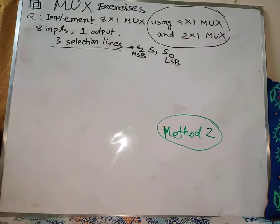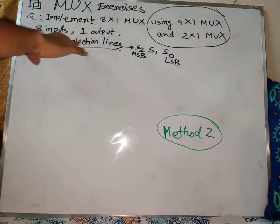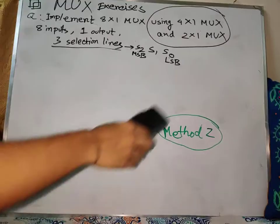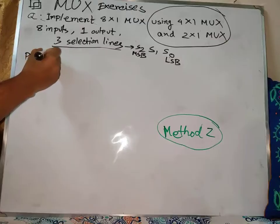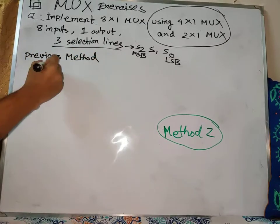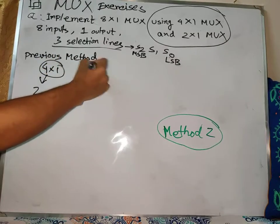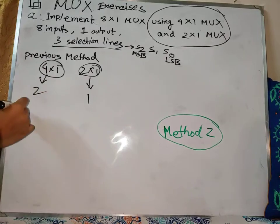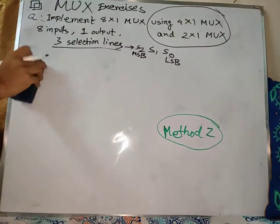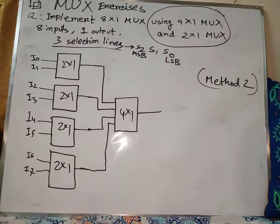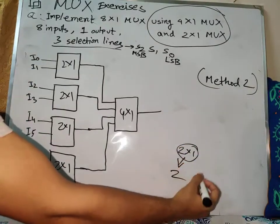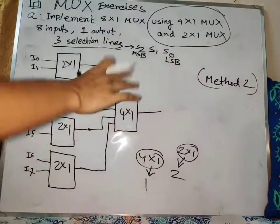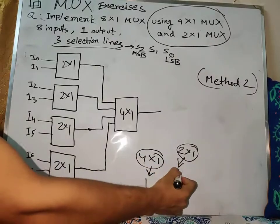Hello, this tutorial covers the same question but with Method 2 — a different approach. We have a 4x1 and 2x1 multiplexer configuration. In the previous tutorial, we tried 4x1 marks with 2x1 and 2x1. Now in Method 2, we have 2x1, 2x1, and 4x1 blocks to construct the circuit.